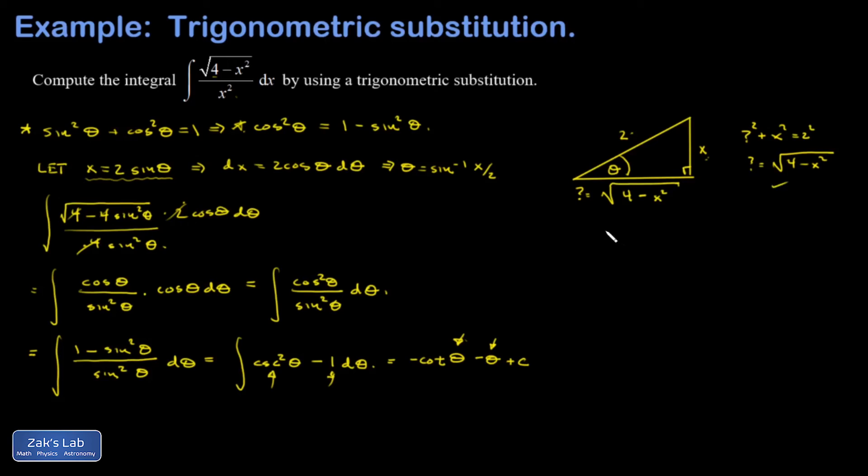The point of that is it now allows me to find the cotangent of this angle. And the cotangent is 1 over the tangent or the reciprocal of tangent. So I'm going to take adjacent over opposite. So I end up with a negative cotangent of this angle. That's a root 4 minus x squared all divided by x minus theta itself, which is the inverse sine of x over 2 plus an arbitrary constant.